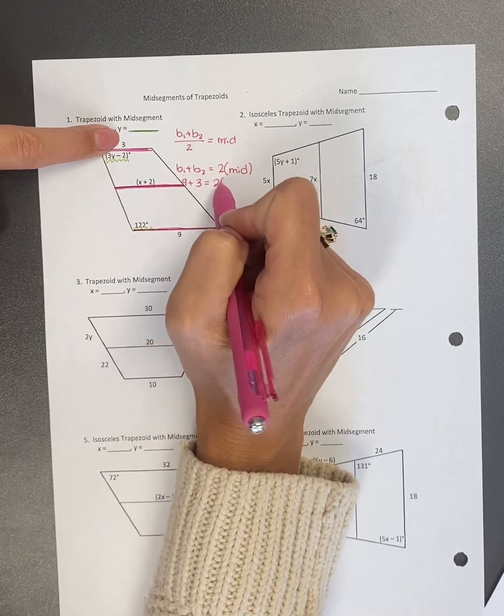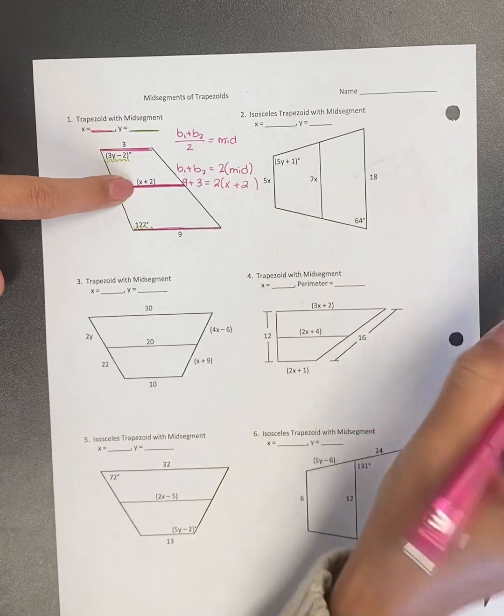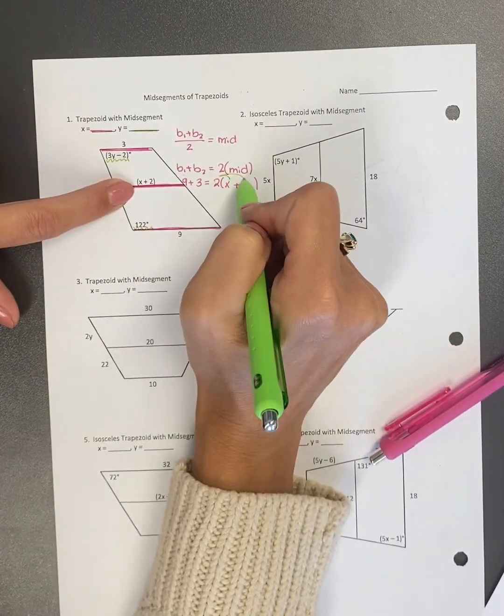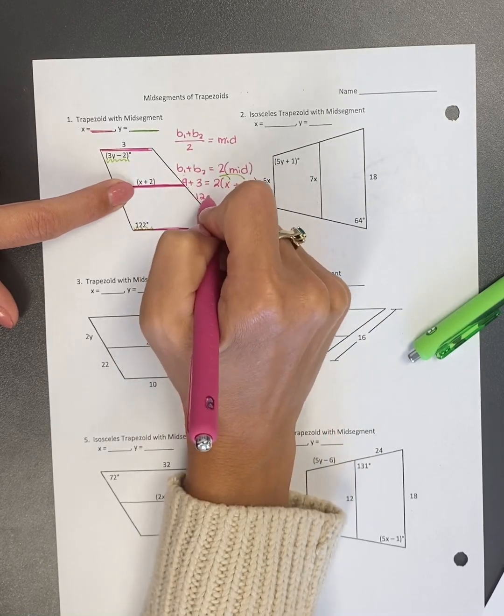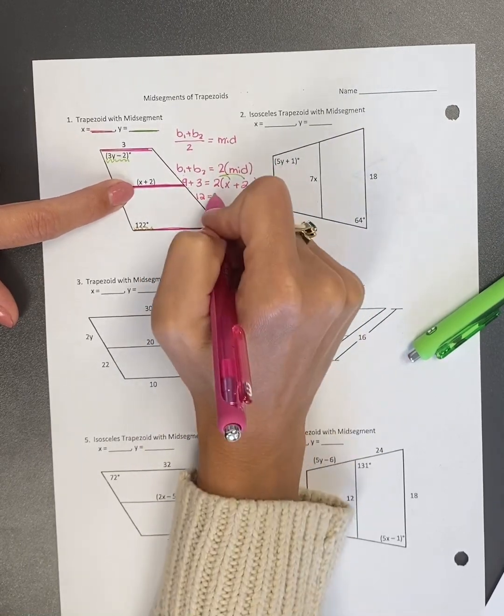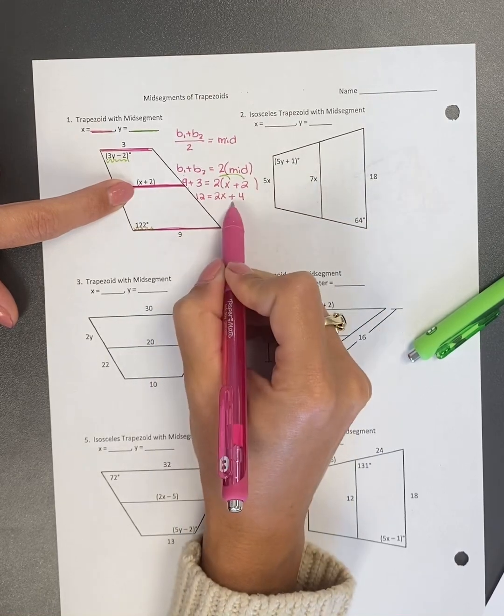And I'm doing two times the middle, which is X plus two. To get rid of my parentheses, I'm going to have to distribute. So I have nine plus three is 12 equals two times X is two X. Two times two is four. And now I can solve for X. It's a two step equation.